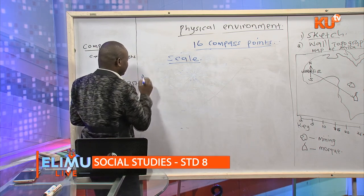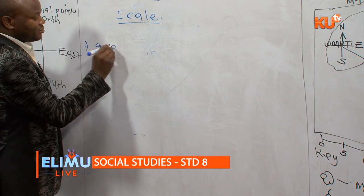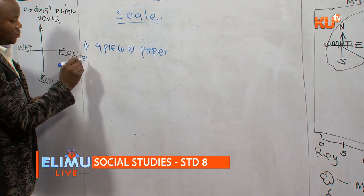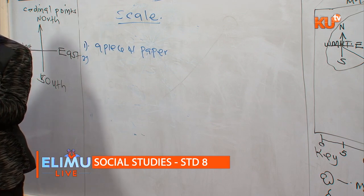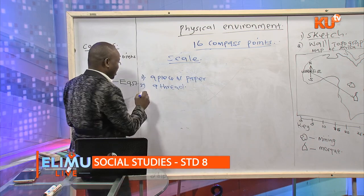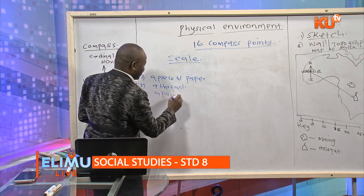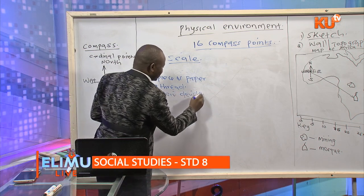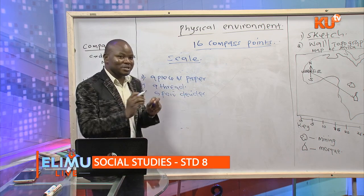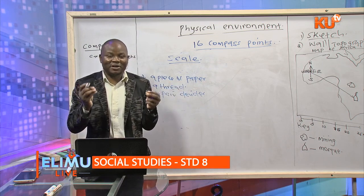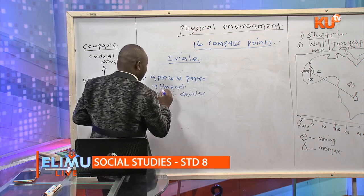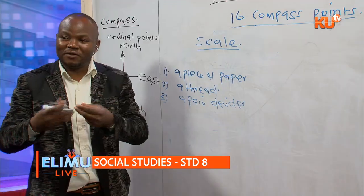Use a non-elastic thread, which cannot stretch further, to get an accurate measurement. The scale ranges from 0 to 50 kilometers: 0, 10, 20, 30, 40, 50. Put a piece of paper along the scale, stretch it to the required point, and use it to get the correct measurement.